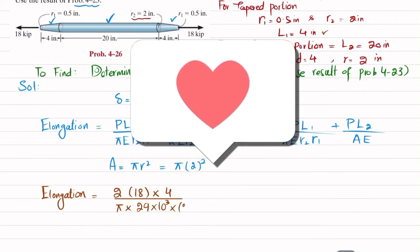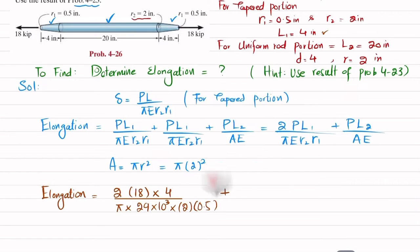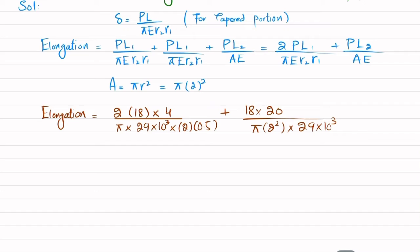So E value is 29 into 10 raised to power 3 ksi, multiplied by R2 which is 2, times R1 is 0.5, plus P which is 18 times length of uniform rod which is 20, divided by area which is pi times 2 squared, times E, 29 into 10 raised to power 3 ksi.